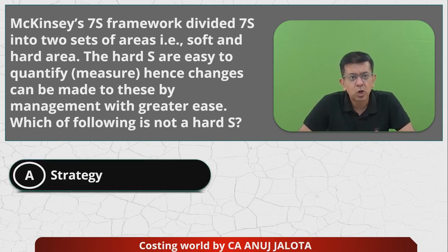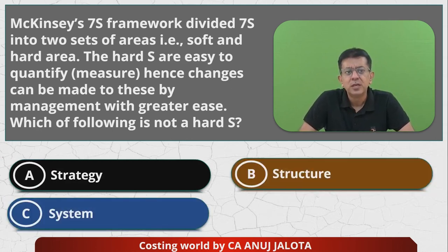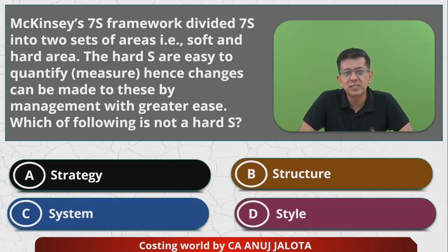The four options are: A — Strategy, B — Structure, C — Systems, and D — Style.